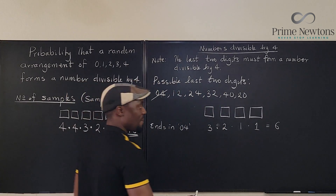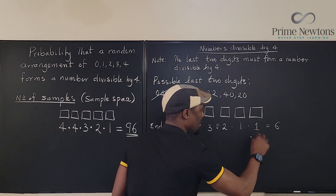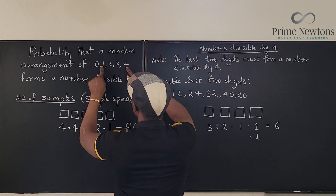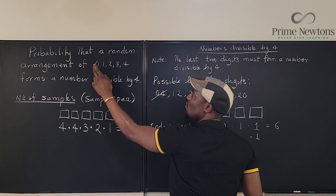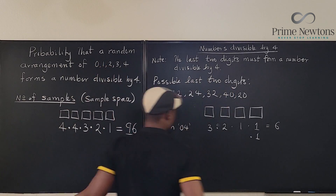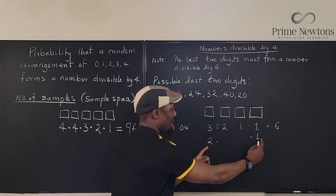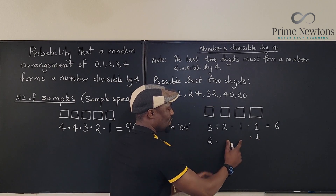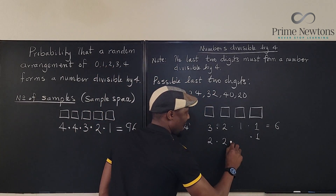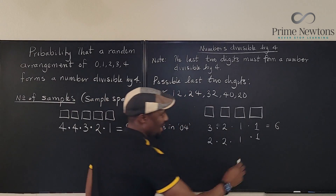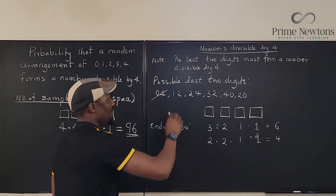If the number ends in 12, that's the block — 1 option for the block. I've used 1 and 2, so the remaining digits are 0, 3, and 4. But I can't use 0 as the first digit, so I only have 2 options for the first position, then 2 options for the next, and 1 for the last. That gives 2 × 2 × 1 = 4.